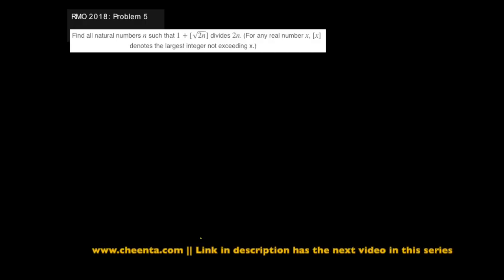Hello, this is the fifth problem from RMO 2018. It's quite an interesting problem in its own right. It says that we want to find all natural numbers such that 1 plus floor of square root of 2n should divide 2n.